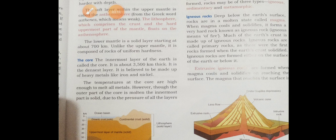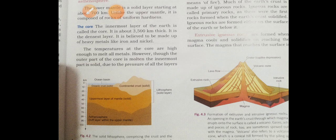We can call this molten form of rocks is magma. And when magma cools and solidifies, it can form a rock. And these kinds of rocks are called igneous rocks. When magma cools and solidifies, it forms a very hard rock known as igneous rock. And two types of rocks are there.